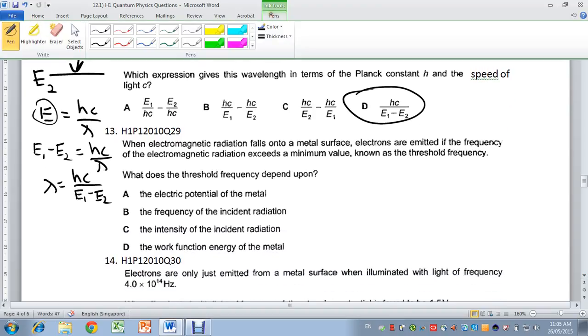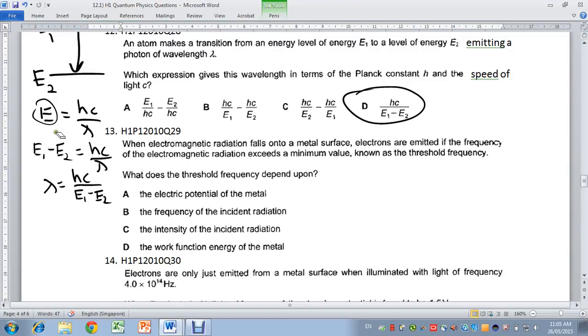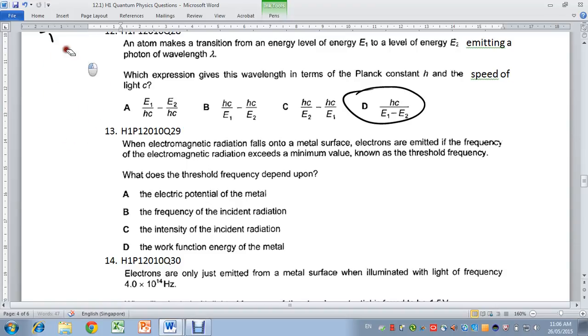Moving on. Question 13. When electromagnetic radiation falls onto a metal surface, electrons are emitted if the frequency exceeds a minimum value known as threshold frequency. What does the threshold frequency depend on?